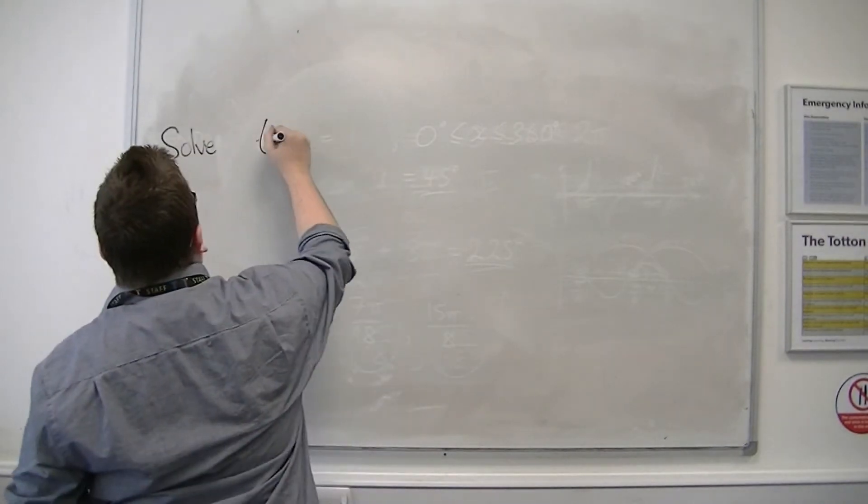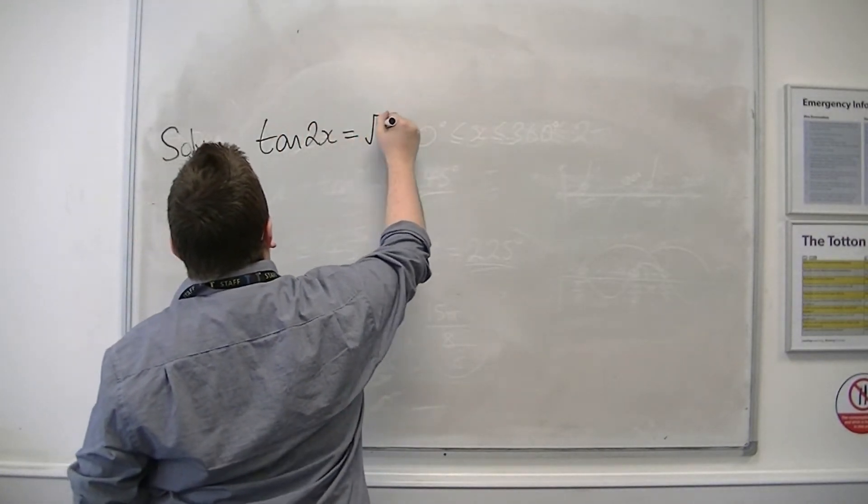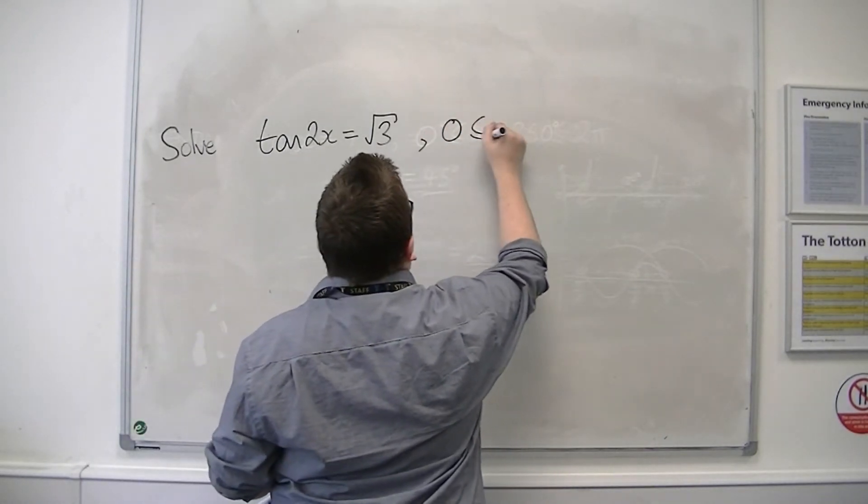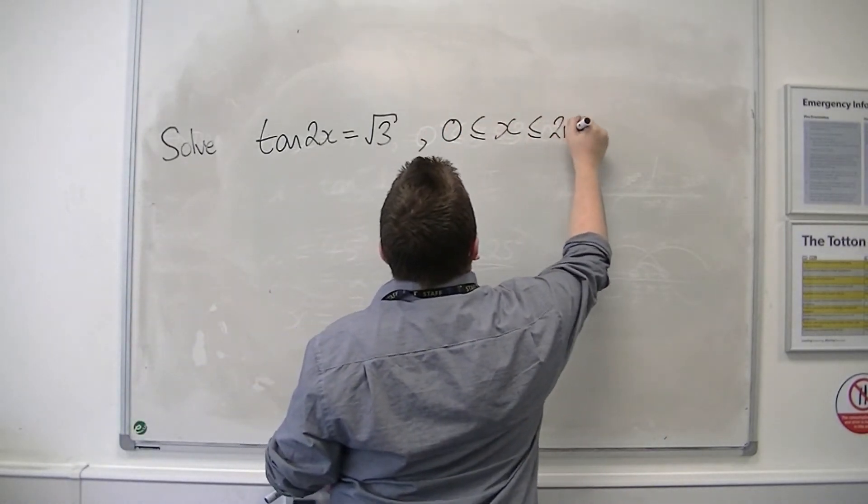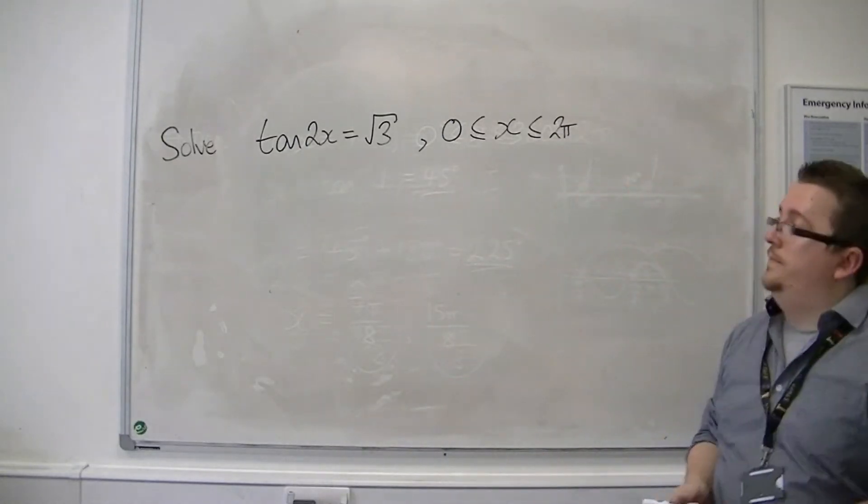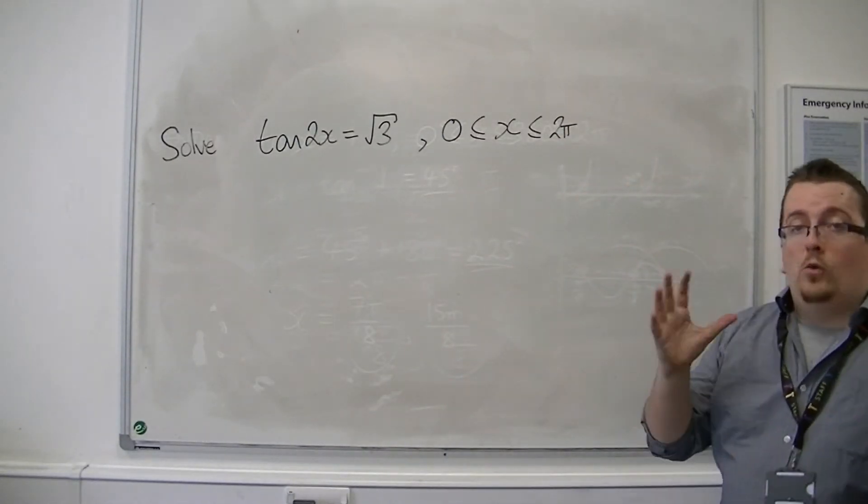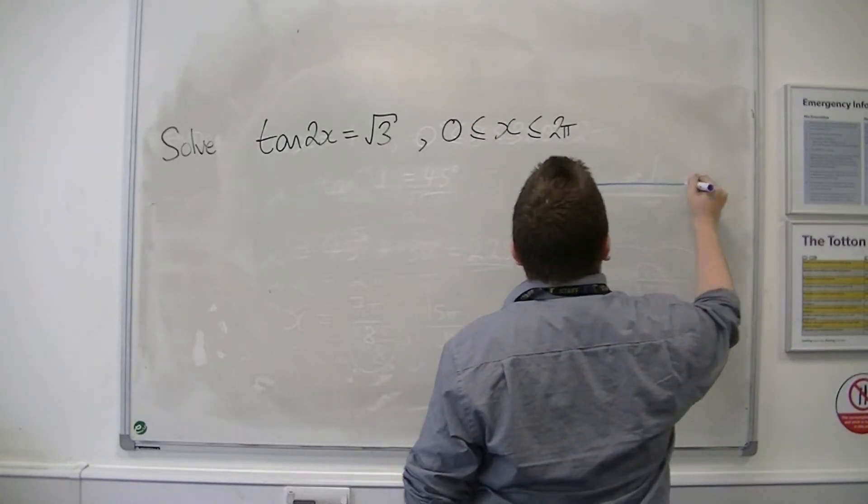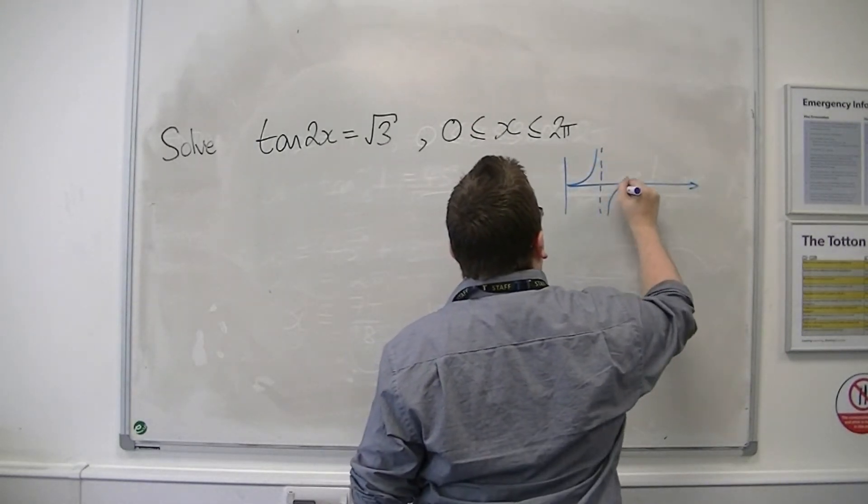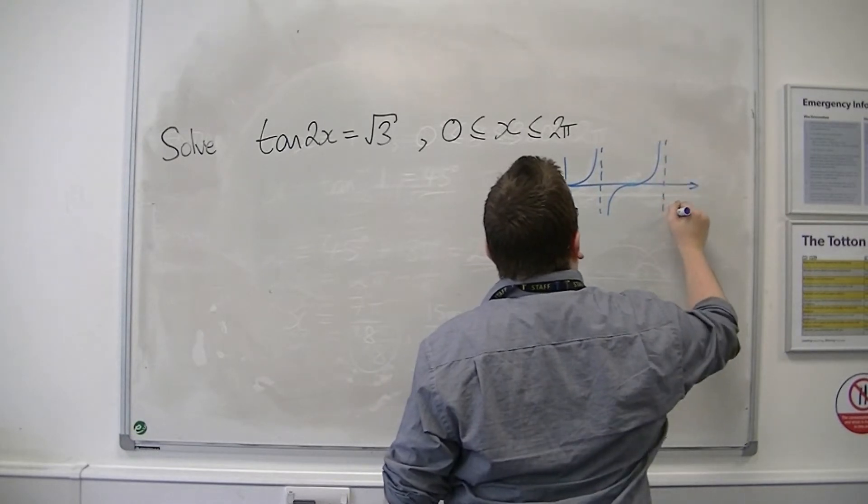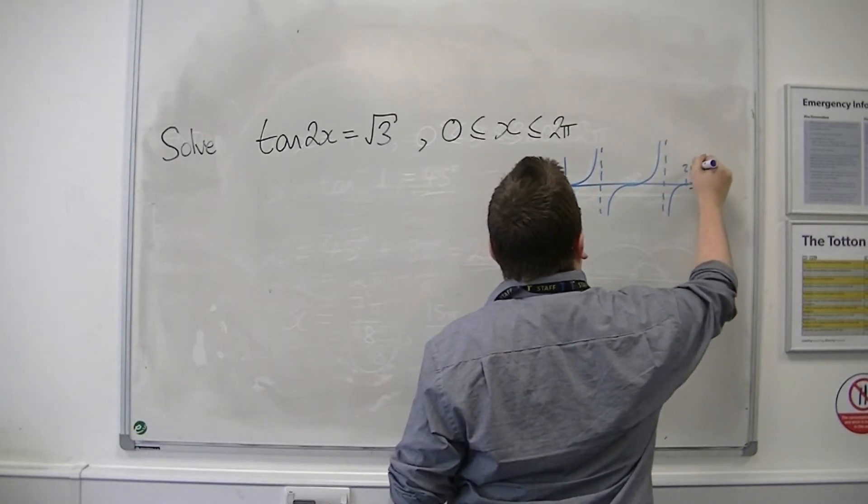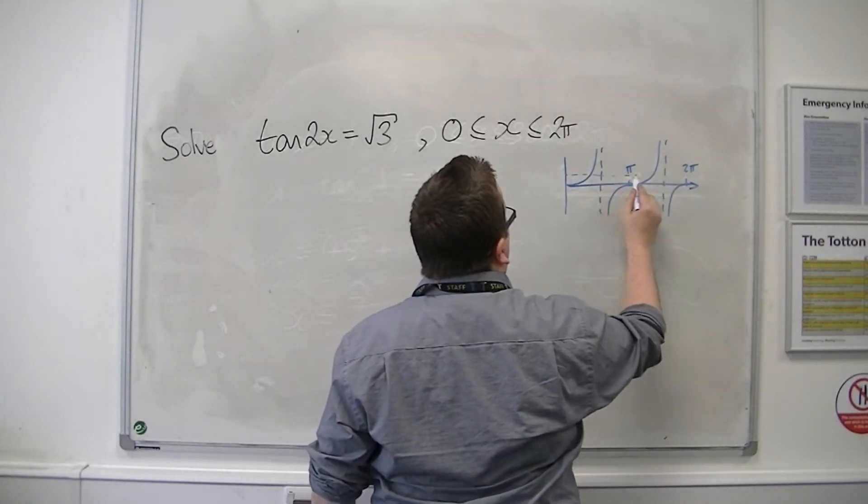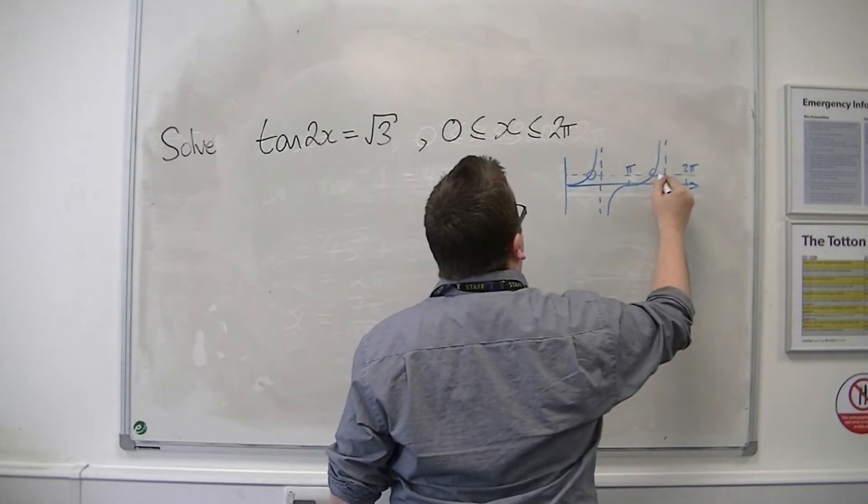Let's say we've got tan of 2x is equal to root 3. And I'm going to be solving in radians this time, 0 to 2 pi. So we sketch tan between 0 and 2 pi. So root 3 will get us two solutions.